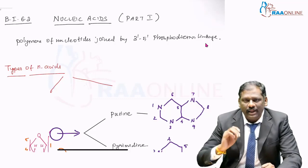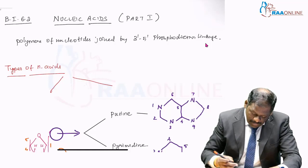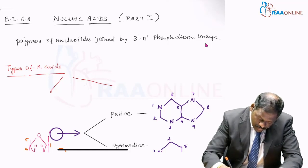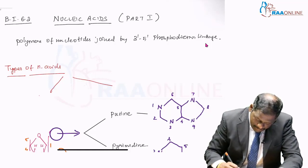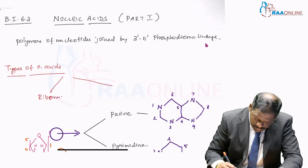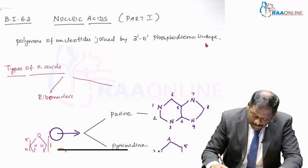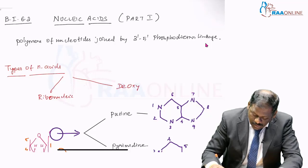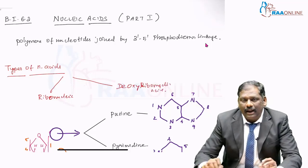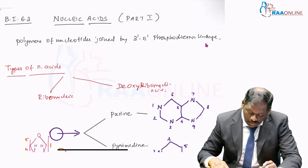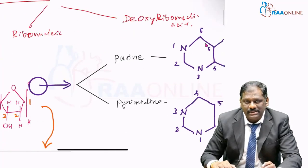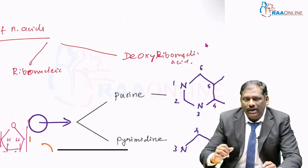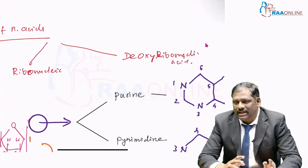What are the types of nucleic acids you all know? It could either be a ribonucleic acid or deoxyribonucleic acid. What is the difference between ribonucleic acid and deoxyribonucleic acid?